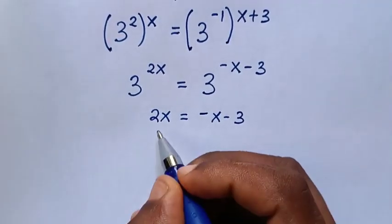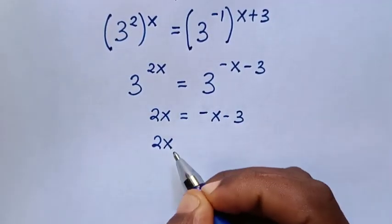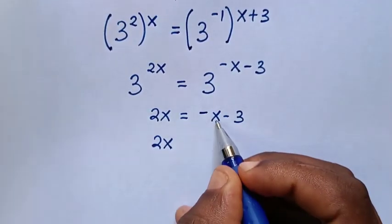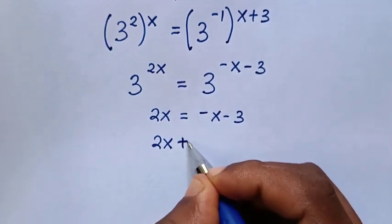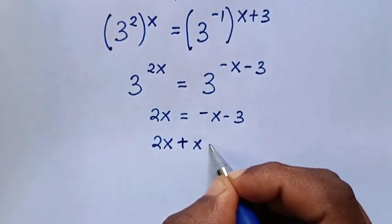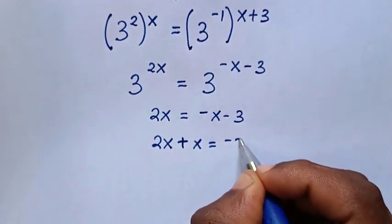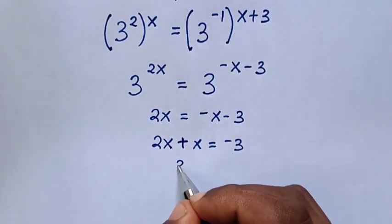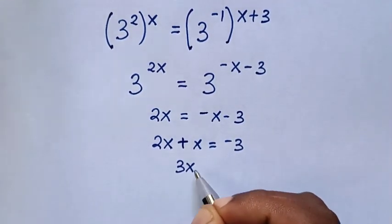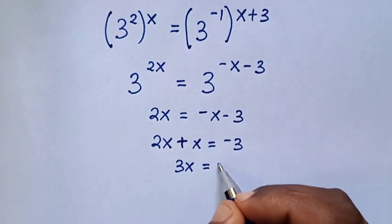Then it will be 2x. We take this negative x to the left side, so it will be plus x is equal to negative 3. Then, 2x plus x is 3x is equal to negative 3.